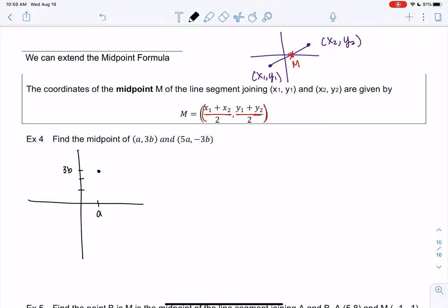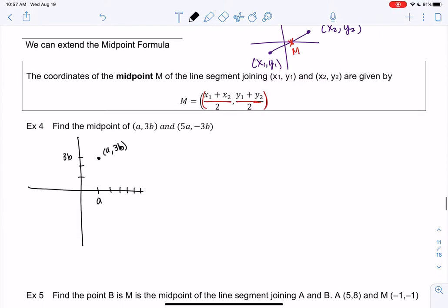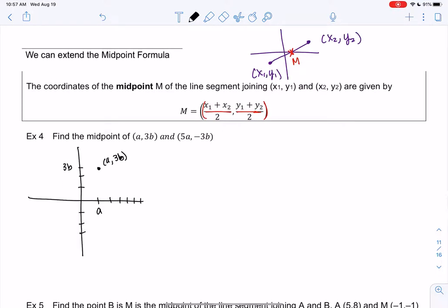We're just estimating 3b. And then we have (5a, -3b), so my guess is negative 3b would be the opposite, and so we'll make a point. I have no idea where these points are, we're just estimating. But we'll make a line, and we're trying to find the midpoint. So we'll just average out the x values, and we'll average out the y values.